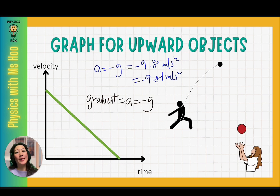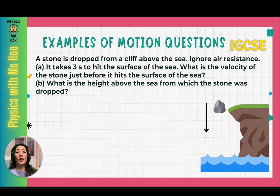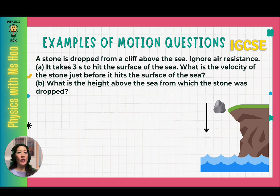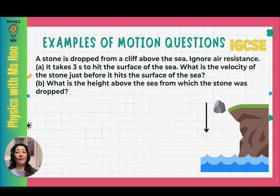Now let's look at how to answer calculation questions involving gravitational acceleration. I'll show you how to solve questions for IGCSE, SPM, and A-levels style — they are actually all the same; the main difference is the value of G and the formulas used. In IGCSE, we learn fewer formulas — just the acceleration and displacement formula — whereas for SPM and A-levels, you learn more linear motion equations, typically known as the SUVAT equations.